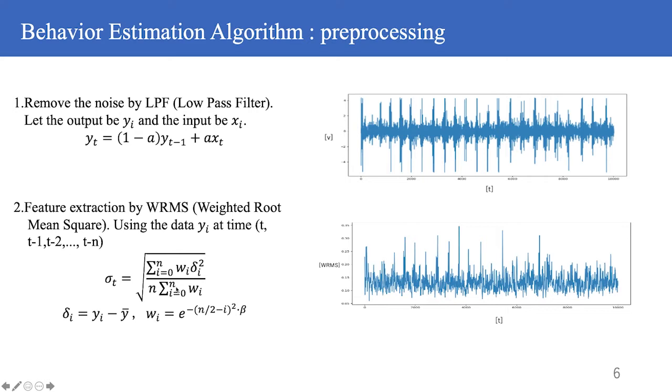Let us look at each item in detail. First, the preprocessing part. The low-pass filter is used to remove noise and the weighted root-mean square is used for processing. The figure on the right shows the waveform after the processing.